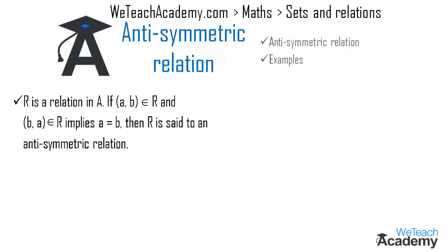So here R is a relation in A, and if (a,b) belongs to R and (b,a) belongs to R implies a is equal to b, then R is said to be an antisymmetric relation. Now let me explain this concept with the help of an example.